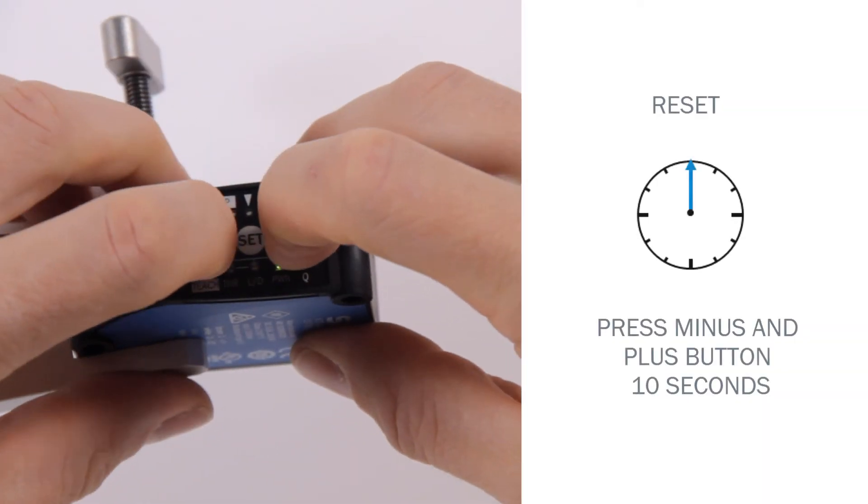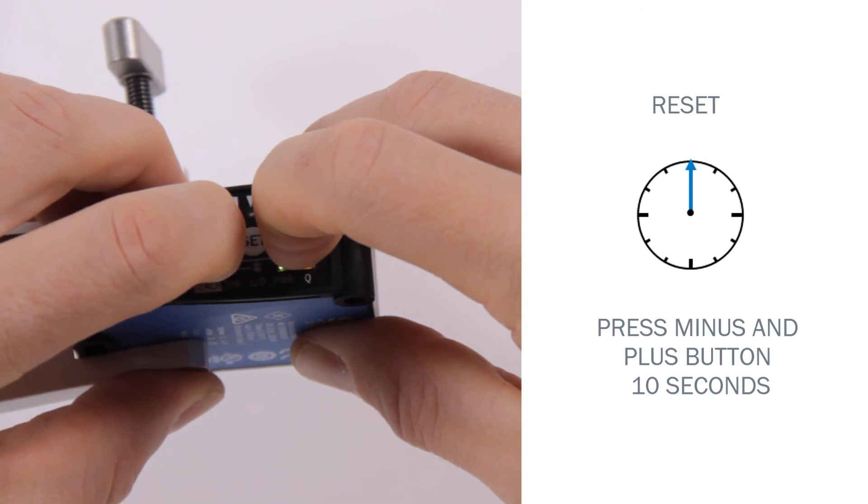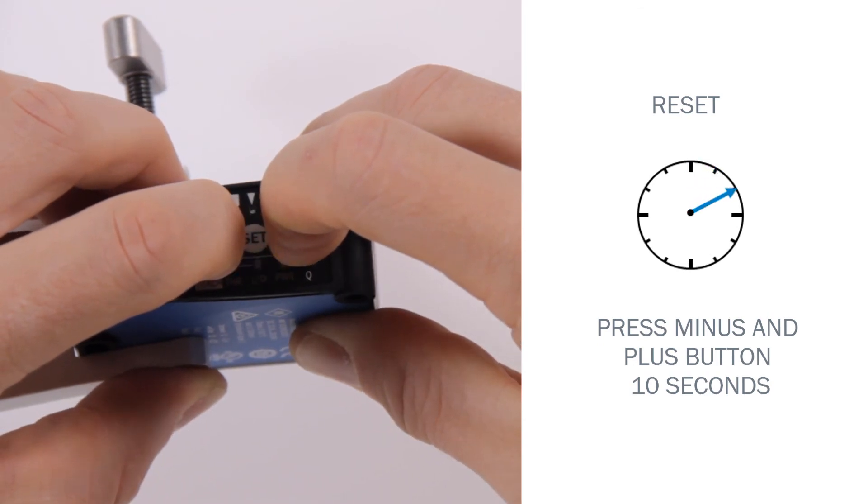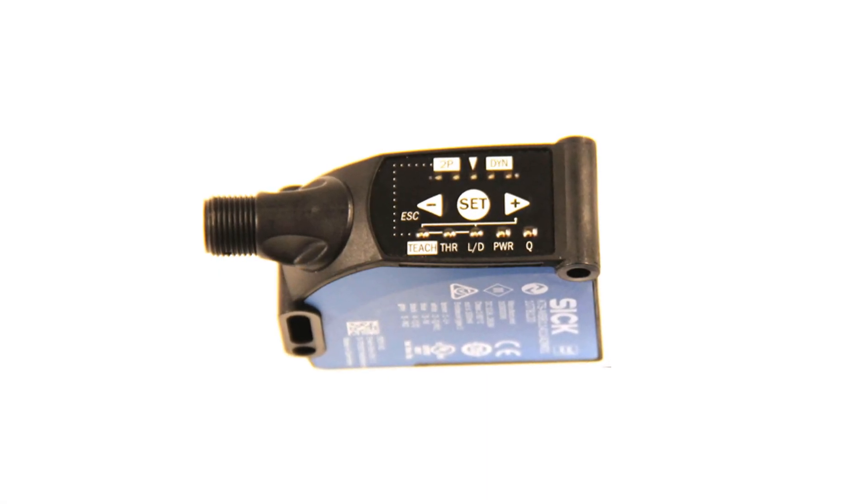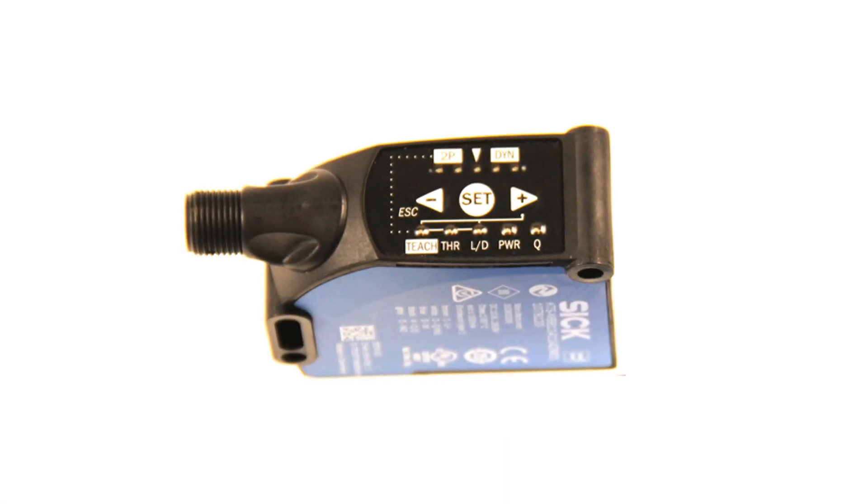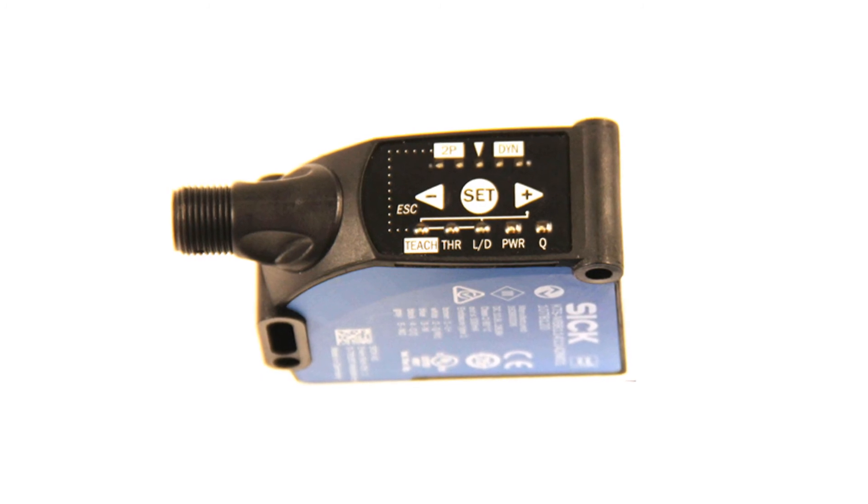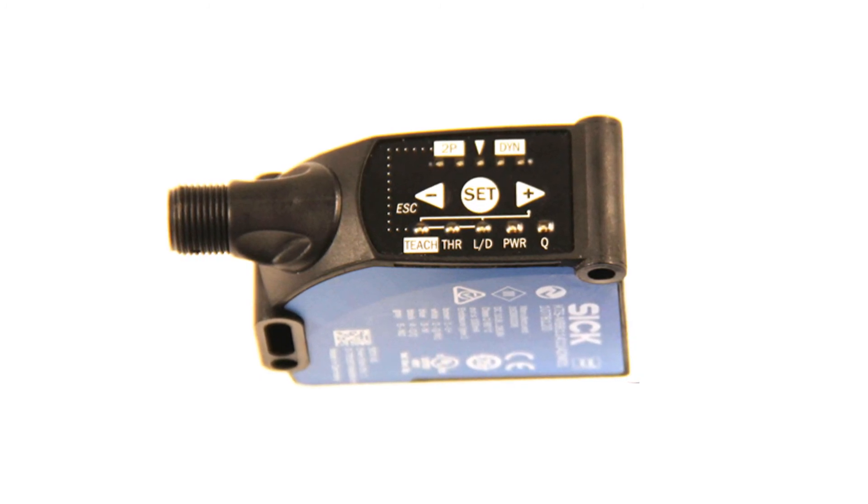Holding down the plus and minus button at the same time for longer than 10 seconds will lead to a reset of the sensor. We hope that this tutorial helped to understand the settings of the KTS Core Contrast sensor from SICK and hope to see you during one of the next tutorials.